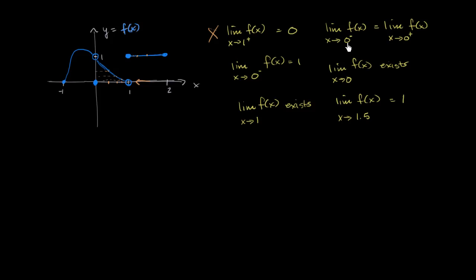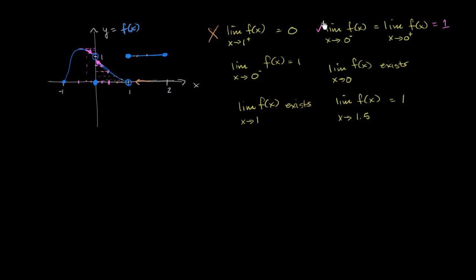Next: the limit of f of x as x approaches 0 from the negative direction is the same as the limit from the positive direction. Approaching 0 from the negative direction, f of x seems to approach positive 1. From the positive direction, trying x = 1/2, then 1/4, then just barely above 0, f of x also approaches 1. Both one-sided limits equal 1, so this statement is true.